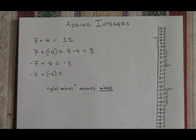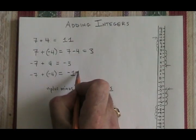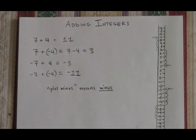We go to negative 7 on our thermometer. And subtracting 4 means we go down by 4. And we end up with negative 11. This is how you add integers.